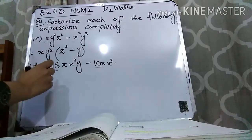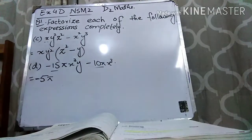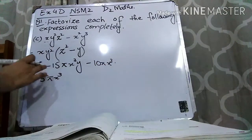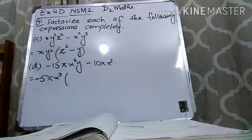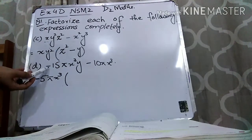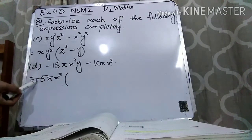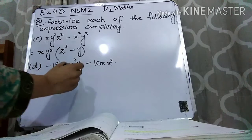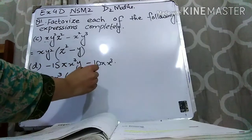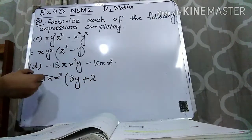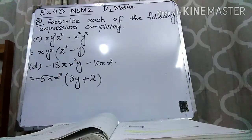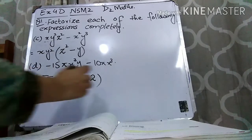Pi is present in both terms so take pi common. X cube is present in both terms so take X cube common. Y is only in the first term so do not take Y common. With minus 5 pi x³ taken out: 5 times 3 is 15, leaving Y; the minus becomes plus because minus was taken common, and 5 times 2 is 10, leaving 2. So the answer is −5πx³(3y + 2).